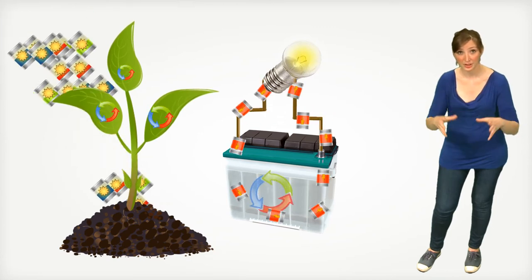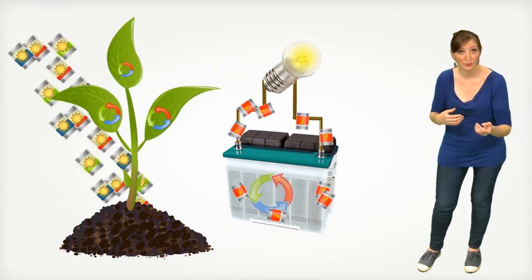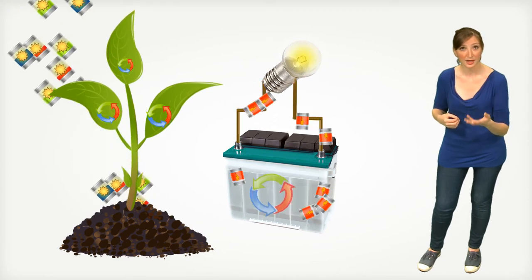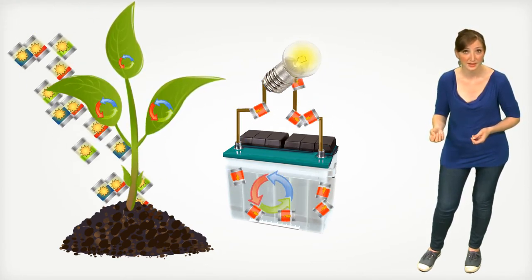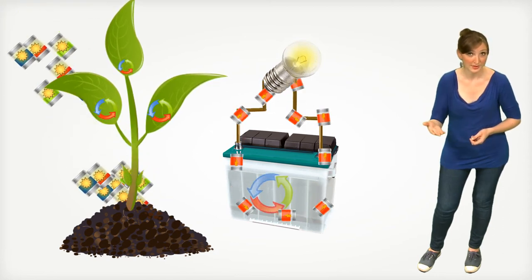By associating both, we can therefore produce electricity from light. This is the dye-sensitized solar cells principle, abbreviated DSC. We also talk about Grätzel cells.